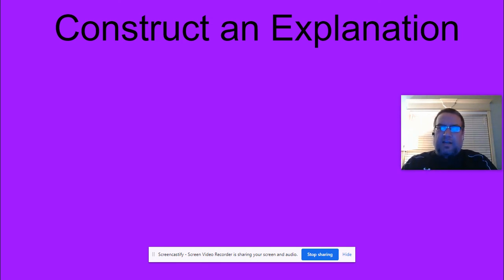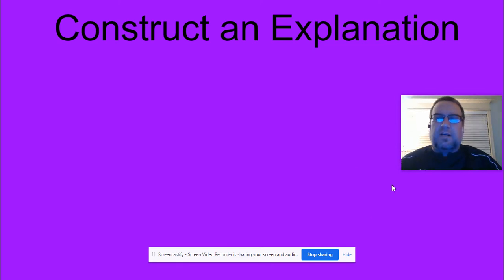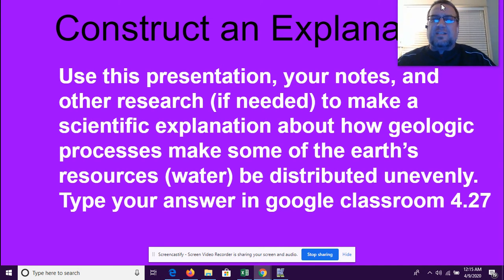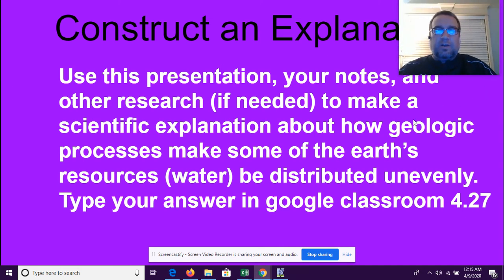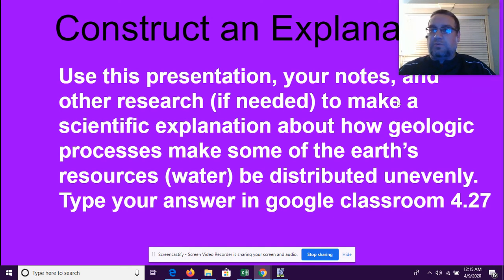Little Rock is where it is because of the Arkansas River. Benton is where it is because of the Saline River. New York City is there because of the Hudson River and the ocean. Water is not evenly distributed — places where we have fresh water are where people can live. So what I want you to do now on Google Classroom is create an explanation — write a short paragraph explaining how geologic processes make some of Earth's resources distributed unevenly. Erosion causes fresh water to pool and gather in certain places: lakes, rivers, streams — and that's where people usually go and live. Those geologic processes happened in the past and continue today, and our use of the water also makes a big difference.